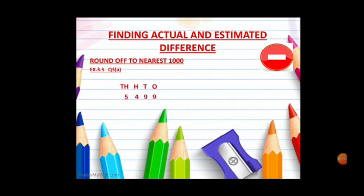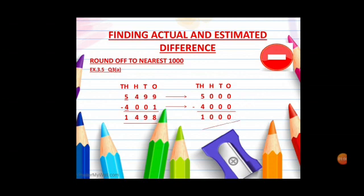My question is 5499 minus 4001. First we will write down the numbers in column, then we will subtract. I have subtracted, the answer is 1498. Now I am going to estimate the answer. For this, I will round off 5499 to 5000, it is rounded off to the nearest thousand. And 4001 will become 4000. Now I will subtract both the numbers, answer is 1000. So 1498 is actual difference and 1000 is estimated difference.